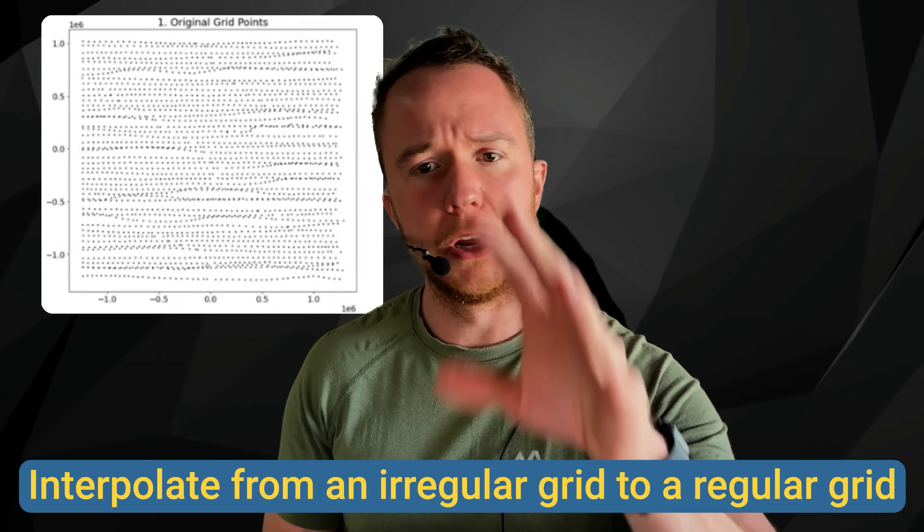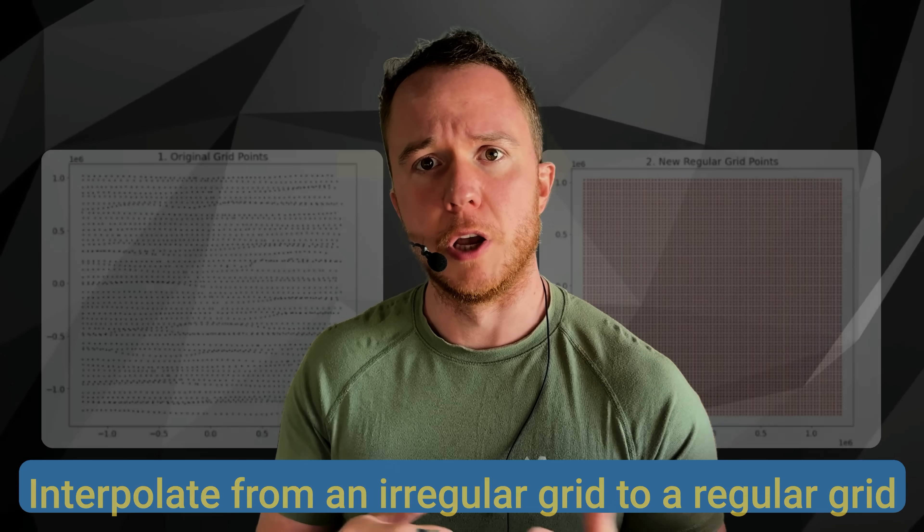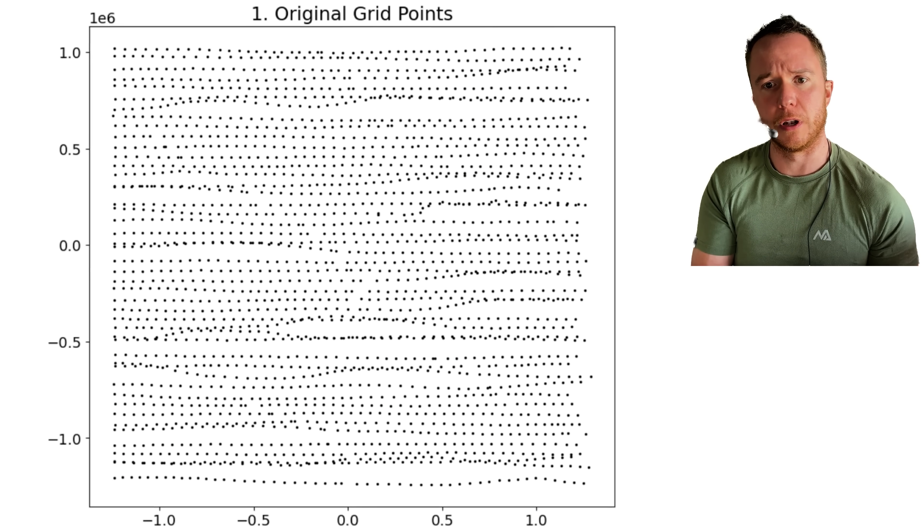In this video, we're going to interpolate from an irregular grid to a regular one. Imagine you have temperature sensors distributed over a city. Those sensors will generally not have the exact same distance to one another, so you can end up with a grid like the one on the left.